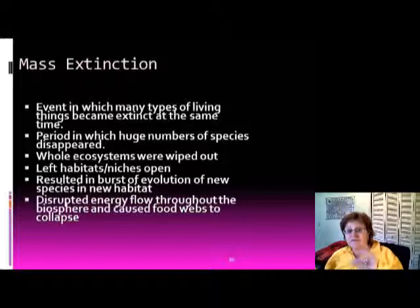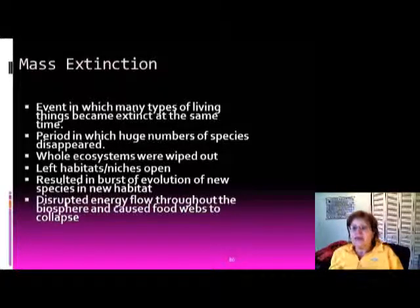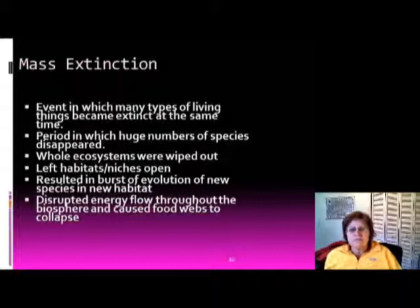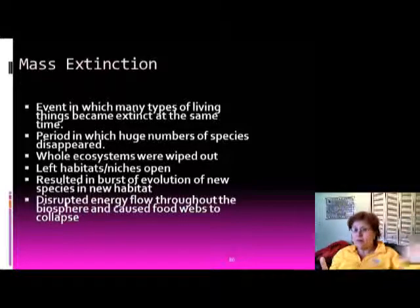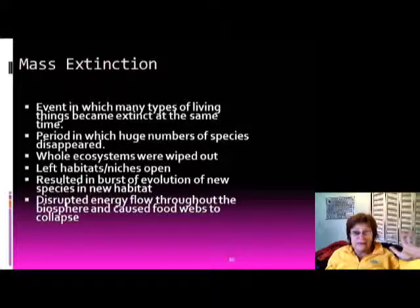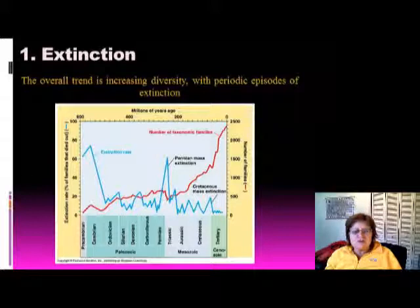When mass extinction happens, evolution really speeds up because you have all those empty ecological niches. It's like the gold rush — when people learned there was gold in California, towns were building up very quickly. That's the same thing with evolution after mass extinction.